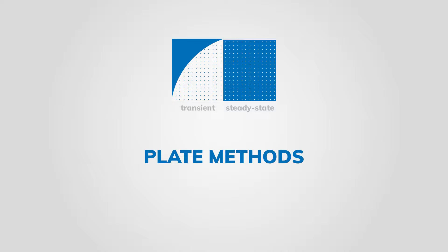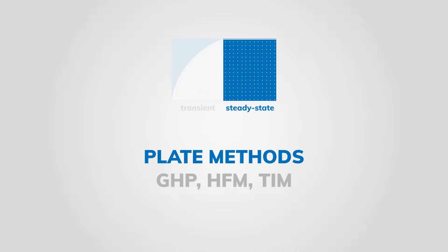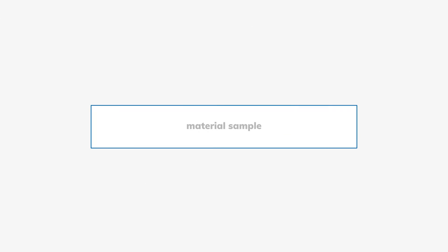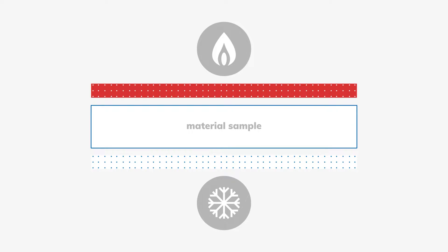Plate methods – such as the guarded hot plate, the heat flow meter, or the thermal interface material tester – belong to the steady-state measurement methods. The material sample is placed between a heated and a cooled plate. This results in a temperature gradient and consequently in a heat flow through the sample, which is monitored until it approaches a constant final value.